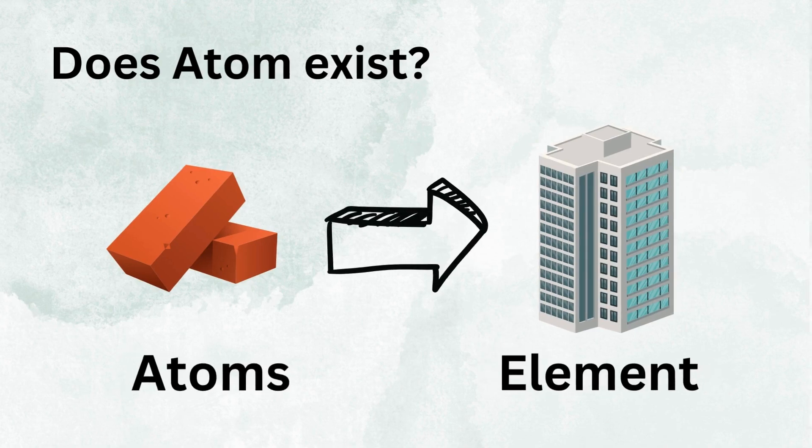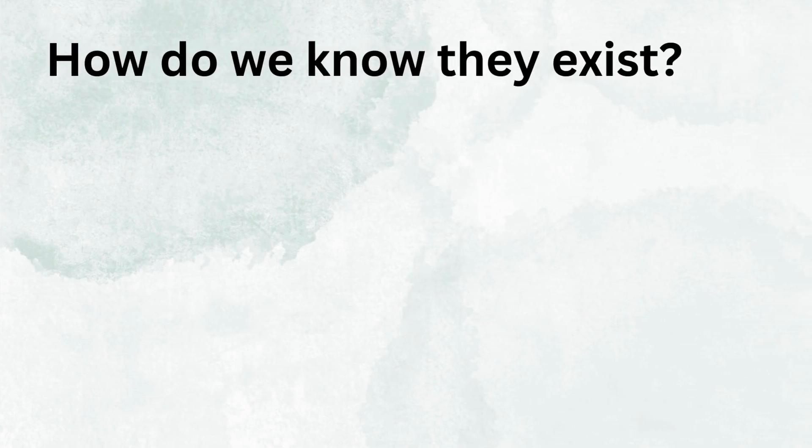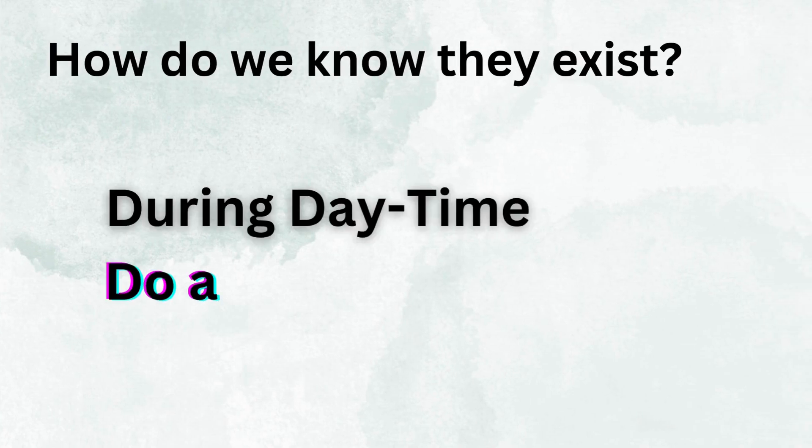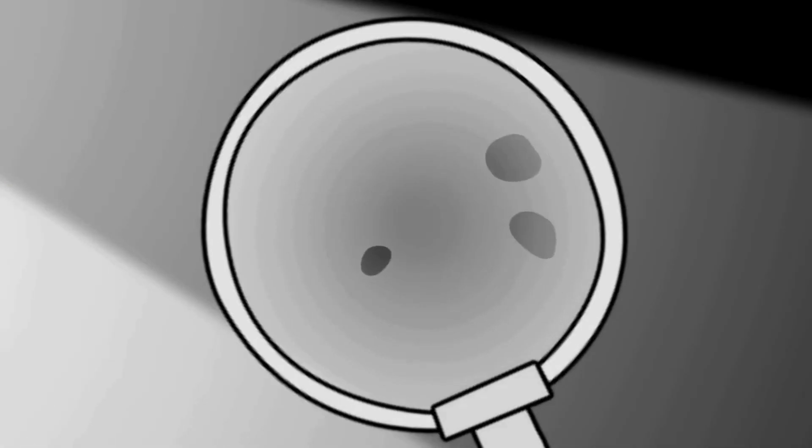But how do we know they exist? During the daytime, I want you to do an experiment. Turn off all the light sources and just push the curtain a little bit so the light is visible to you. Now look closer and carefully. You will see dust particles falling down in some random motion.